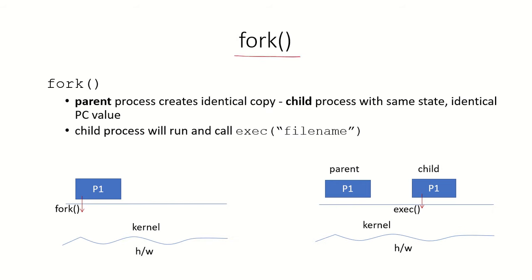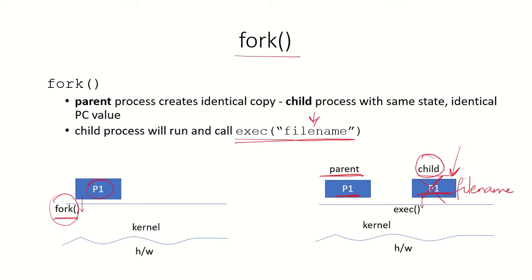Now let's look at another system call: fork. Suppose process P1 is running and it makes a fork system call to the kernel. This fork system call creates an identical copy of the process. So P1 has forked a child — P1 is the parent and the new copy that has been created is the child. The child process can then run and call exec, and it will be replaced by the requested file. In this way, any process can create a child process using the fork system call.